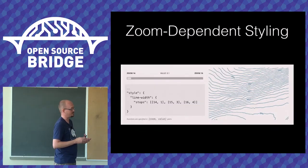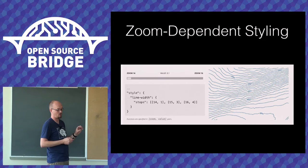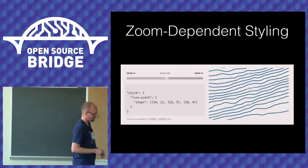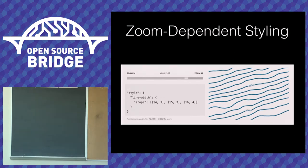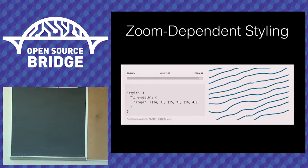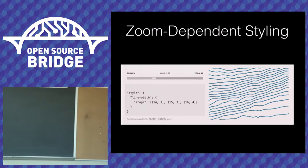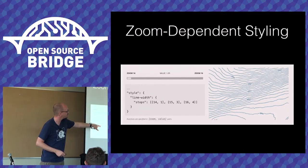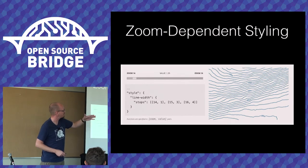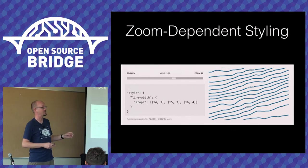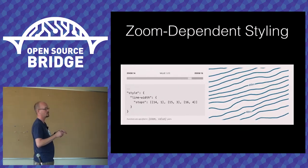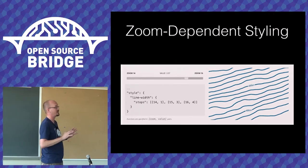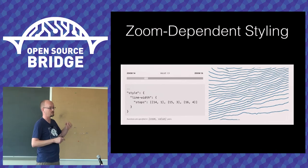This opens up interesting possibilities. For example, you can make line width a function of zoom level: at zoom level 14 it's one pixel, then it smoothly ramps to three and then four as you zoom in further. These are the kinds of things you can do when drawing on the client side instead of pre-baking pixels and downloading them as images.